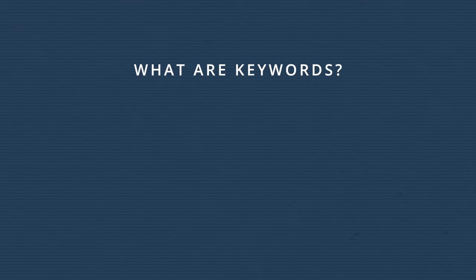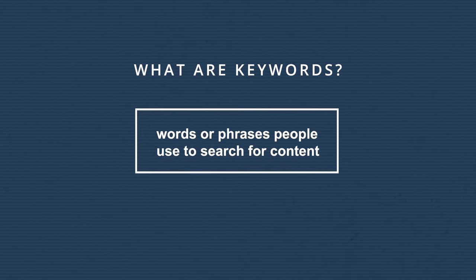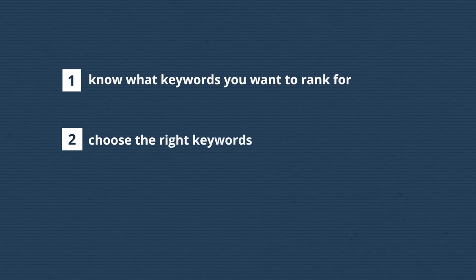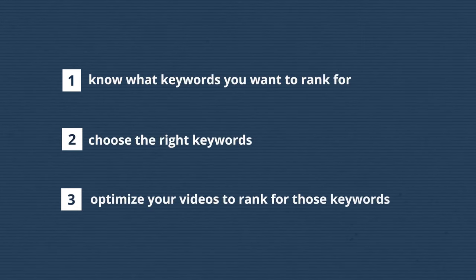So what exactly are keywords? They are simply words or phrases that people use to search for content, and words or phrases that you can use to identify your content. For example, someone might go to YouTube and search 'YouTube SEO basics' and find a video like this one, or they might search 'how to start an online business.' Keywords are extremely important because they are the heart of how any search algorithm works. Users type in keywords to tell the algorithm what type of content they're looking for, and the algorithm uses keywords to match content with search inquiries. It is extremely important that you know what keywords you're trying to rank for, that you choose good keywords, and that you correctly optimize your videos to rank for them.